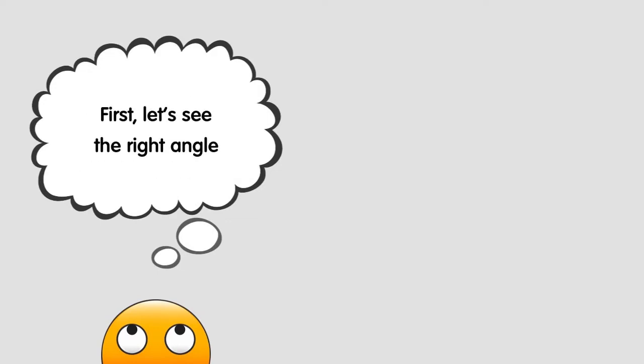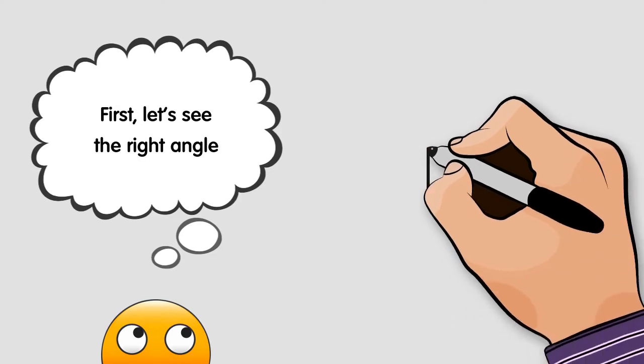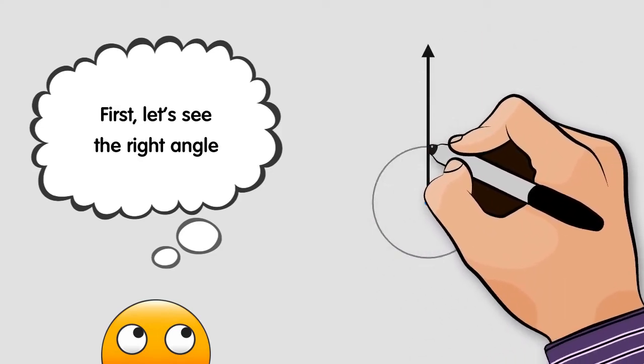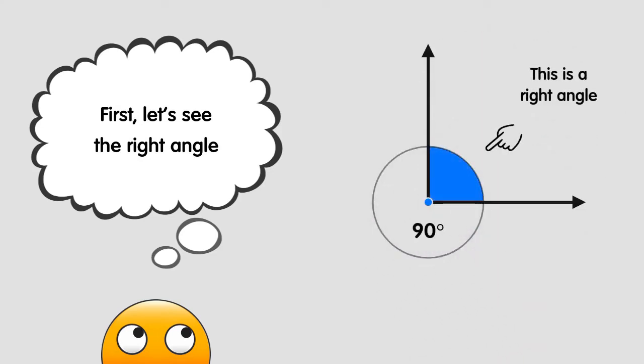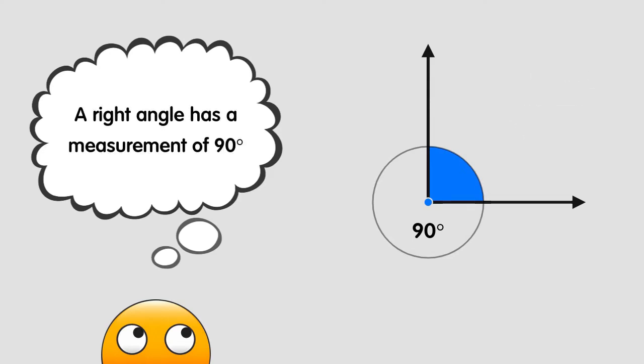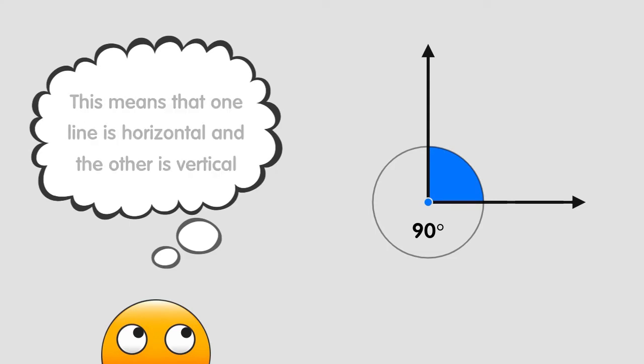The first type of angle we are going to see is called right angle. A right angle has a measurement of 90 degrees. This means that one line is perfectly flat or horizontal and the other is going straight up and down or vertical.